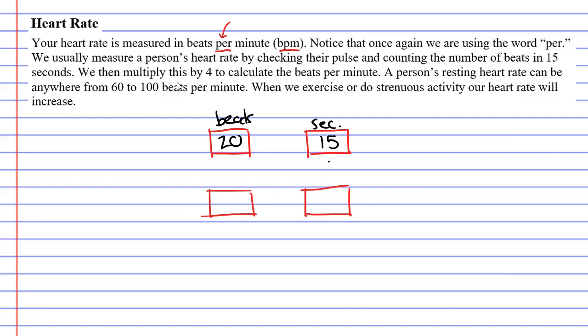What we can do is multiply both values by four. Why would we do that? Well, 15 times four is 60, and 60 seconds is one minute. When we multiply 20 by four, we get 80. So the person's heart rate is 80 beats per minute, or 80 BPM.